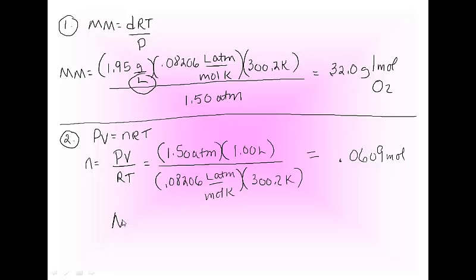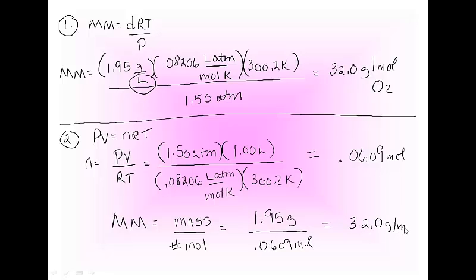Well, molar mass, the definition of molar mass is the mass of the gas over the number of moles. It tells me that the mass of the gas is 1.95 because it's still 1.95 grams for every one liter. I have 1.95 grams and I have 0.0609 moles and I get 32.0 grams per mole, which is still oxygen.